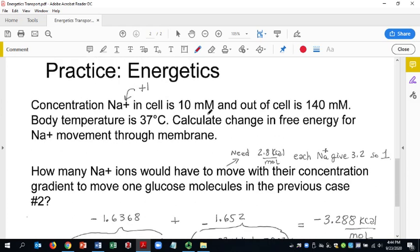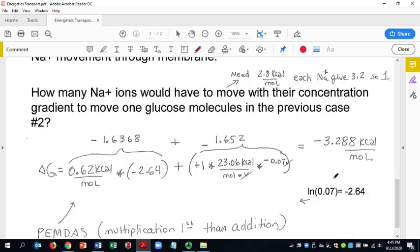Inside the cell is 10 millimolar, outside is 140, so 10 divided by 140 ends up being 0.07, and the natural log of that is negative 2.64. So very quickly, I multiply the negative 2.64 by 0.62, and I end up with negative 1.6368.